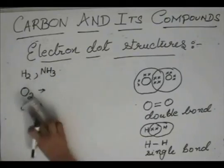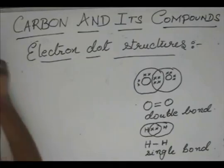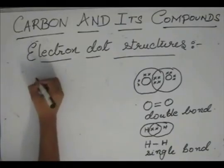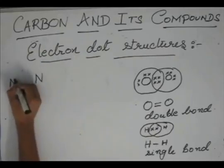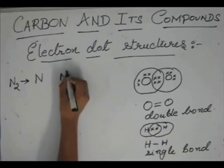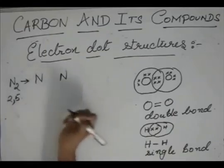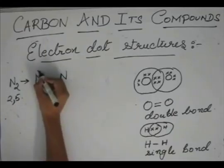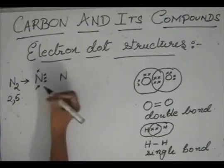We also have triple bonds. Suppose we take N2. Nitrogen has 5 electrons in its outermost orbit, its electronic configuration is 2, 5, so it will have 1, 2, 3, 4, 5.